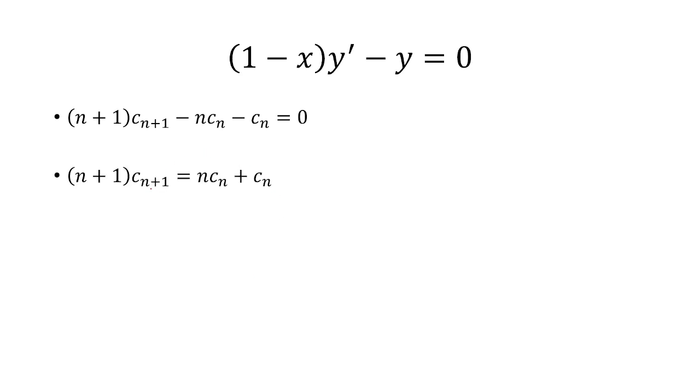And then, now I can solve for c_(n+1) by adding n times c_n plus c_n. Factor out a c_n on the right here. And then I can cancel out an n+1 from both sides and get that c_(n+1) = c_n.